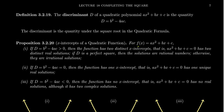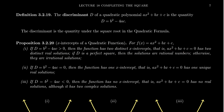Imagine we have a quadratic function f of x equals ax squared plus bx plus c, and we compute the discriminant, capital D. First, consider that D is a positive number. That means the square root of the discriminant is going to be a real number. When you take negative b in the quadratic formula and add or subtract the square root of the discriminant, that gives you two distinct solutions. When your discriminant is positive, that indicates you will have two distinct x-intercepts, which are the solutions to ax squared plus bx plus c equals zero — two distinct real solutions.